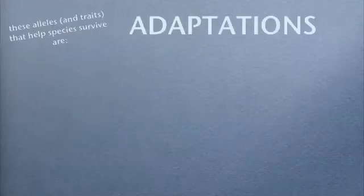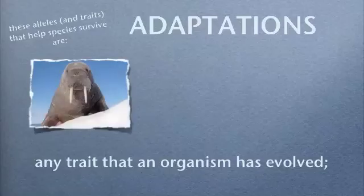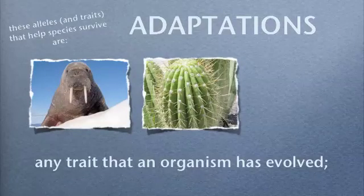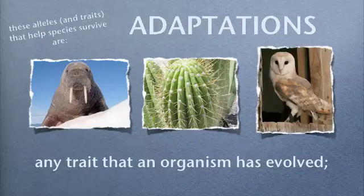We can also repeat evolution in the lab. You can make fruit flies where the first generation starves after 20 hours. But if you take the last few survivors and keep mating them, generation after generation the strongest survive. We went all the way up to 160 hours with fruit flies — that's crazy. Adaptations are any trait that helps you survive — like a walrus has blubber and tusks, a cactus holds lots of water, and an owl is camouflaged.